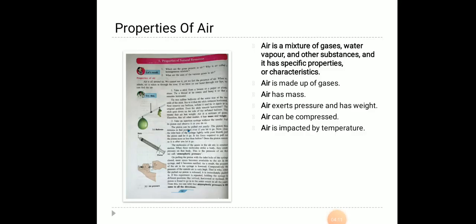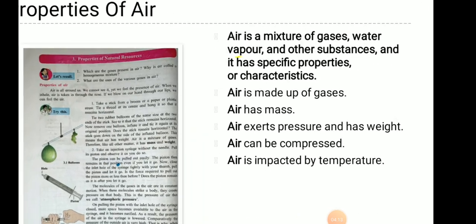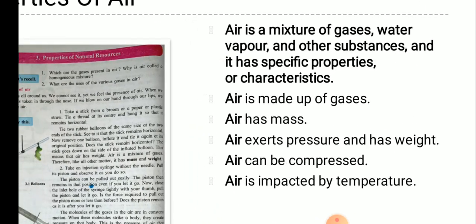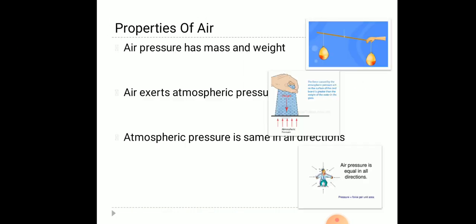So now we can say that air is a mixture of gases, water vapour and other substances and it has specific properties or characteristics. Air is made up of gases. Air has mass. Air exerts pressure and has weight. Air can be compressed. Air is impacted by temperature.